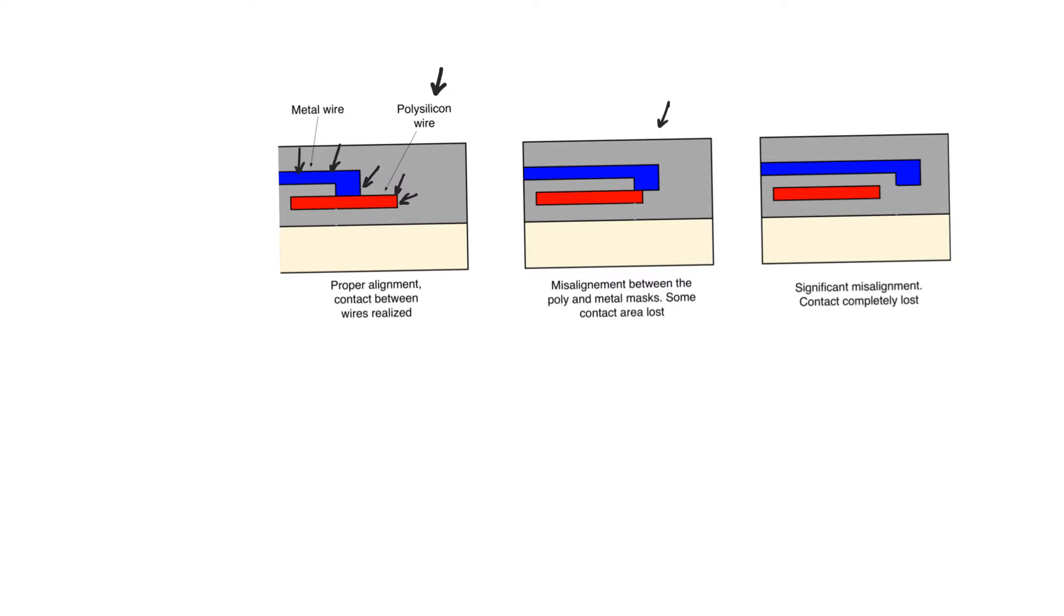And so the contact between the metal and the polysilicon is not only not at the correct location, but also takes place through a much reduced cross section. This means that the resistance of this contact between the metal and the polysilicon is much higher than anticipated, much higher than planned for, which could lead to unplanned delays and setup time violations.